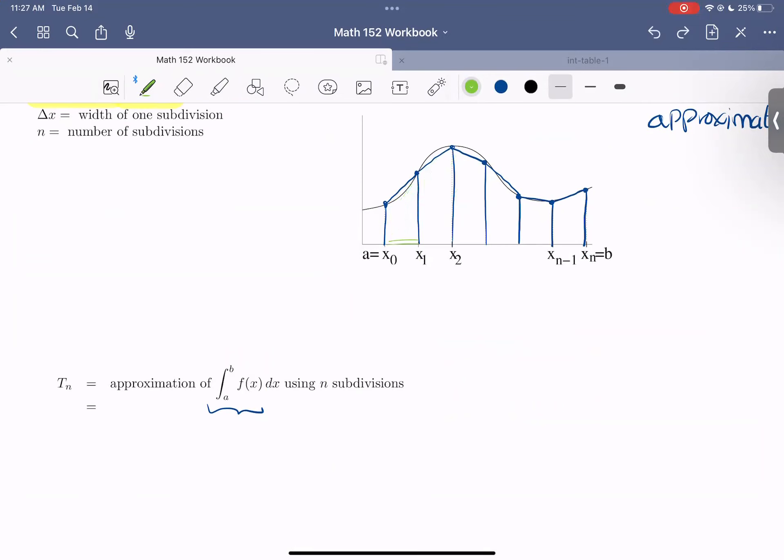So I'm going to label my trapezoids just so we have a name to call them. So I'm going to label the first one, A sub one, A sub two, A sub three. Maybe I should call them T sub numbers or trapezoid, but that's okay. A is fine too.